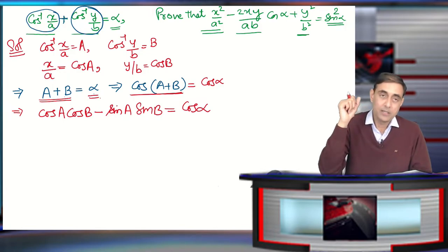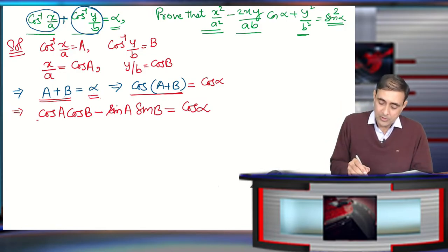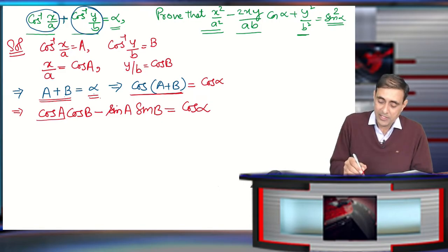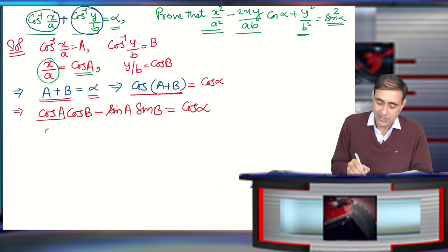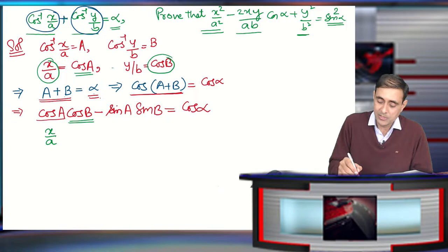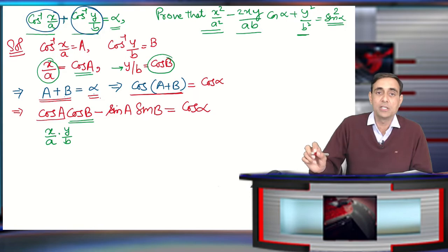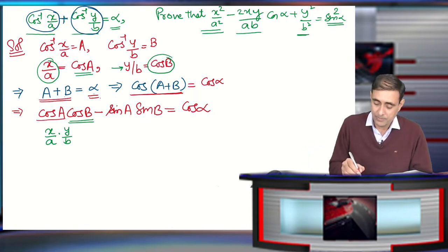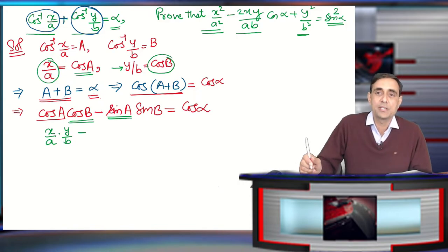Now, cosA is x/a (which we already found), so we write x/a · cosB. CosB is y/b, so we write x/a · y/b. Then we subtract sinA · sinB. We do not have the values of sinA and sinB yet, so we need to find them.